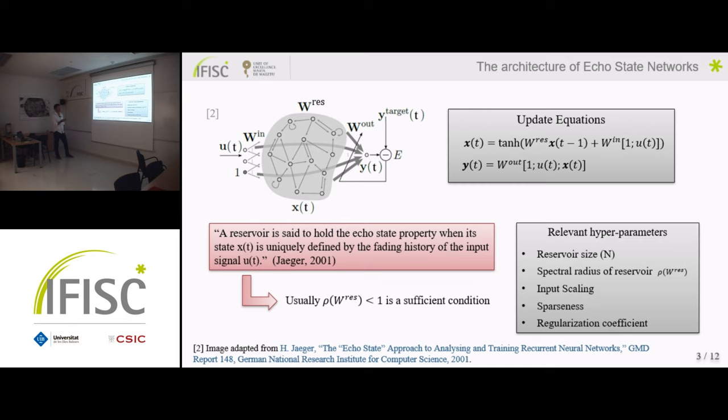So we already see here that our activation function in this case is going to be a hyperbolic tangent. And then we collect at the end the states of the neurons, the inputs and the bias and pass it through a final output weight matrix to obtain the output YT.